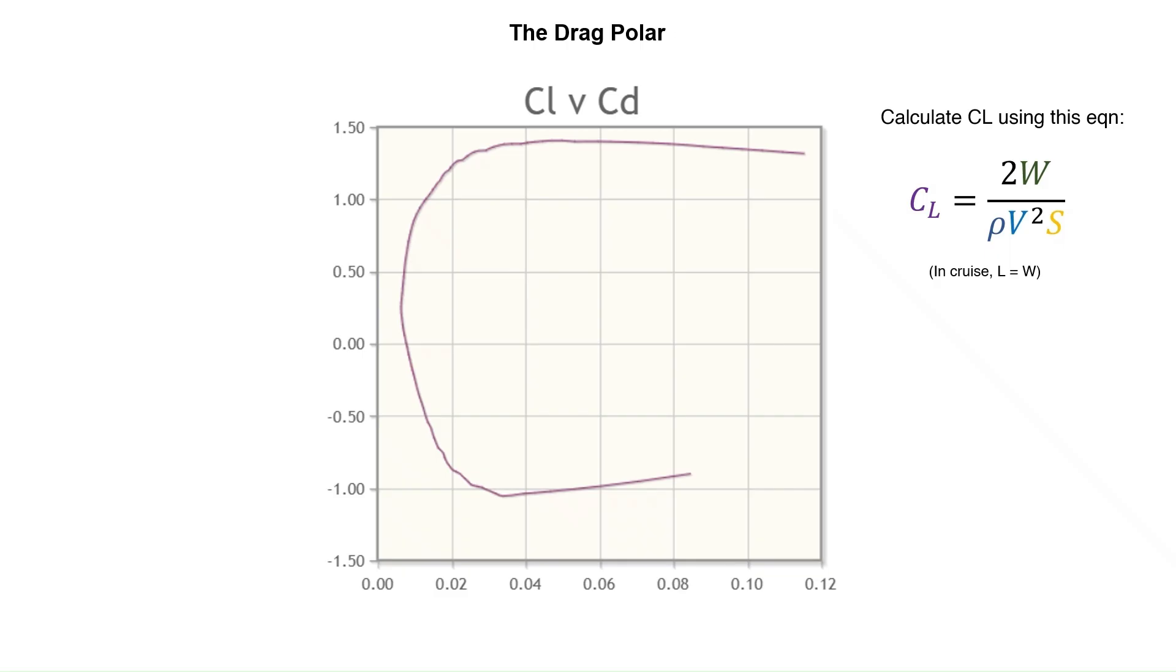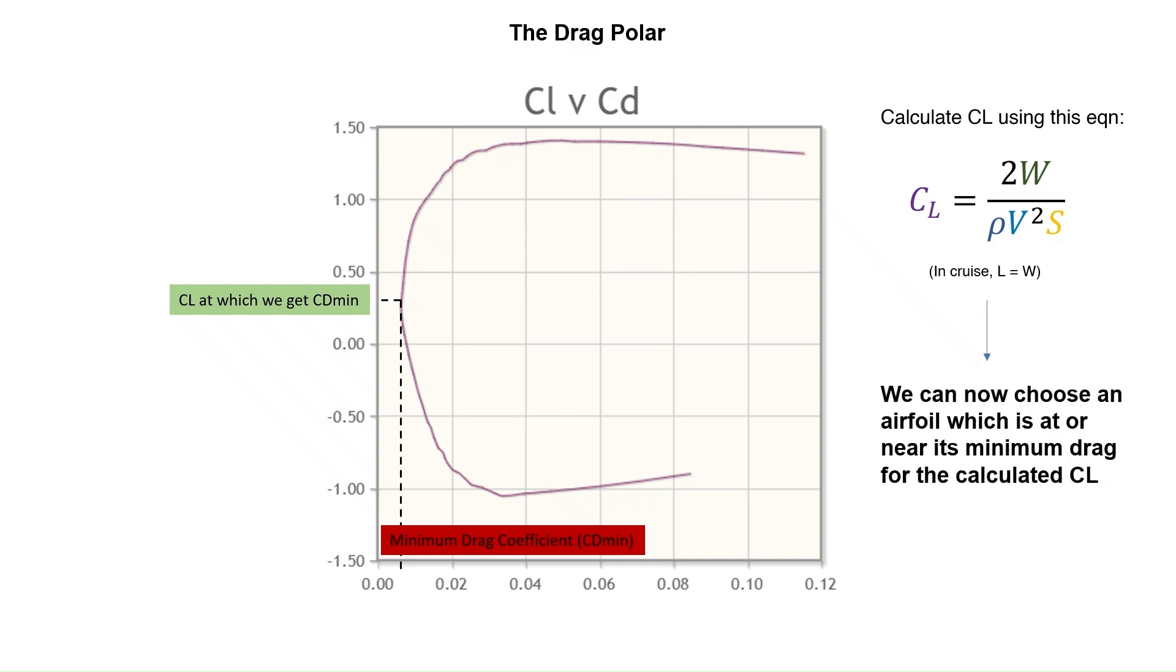Using the drag polar, we can find out what the minimum drag coefficient of the airfoil is and we can determine at what lift coefficient the airfoil has its minimum drag. This is important in airfoil selection as we can now choose an airfoil that is at or near its minimum drag when the airplane is flying at its desired cruise speed. This can be done by calculating the cruise lift coefficient of the airplane by the process shown here and choosing an airfoil that has its minimum drag at this lift coefficient.